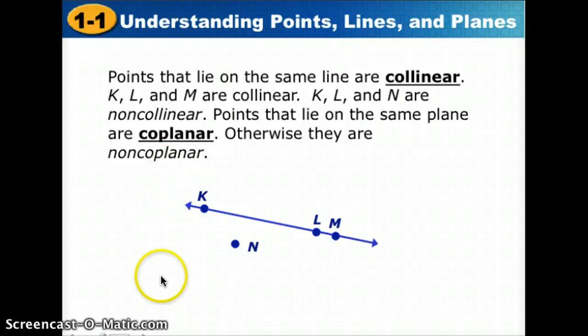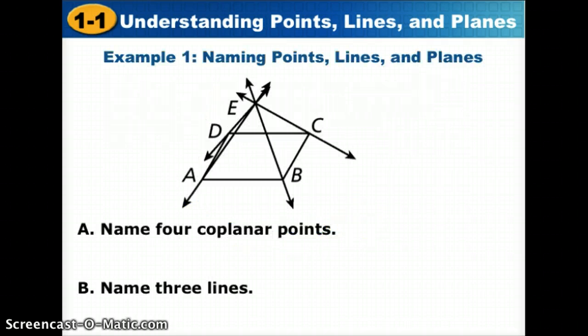We also have coplanar. Notice that co meaning shared means that those points are all on the same plane. So for example if we looked at this diagram and we looked for points that were on the same plane, we'd first have to find a plane. Remember that we said a plane was defined by a parallelogram. You see this parallelogram. We ask ourselves what four points or any are on that same plane. We'll see that B is here, C is here, D is there, and A are all on the same plane.